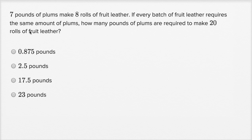So, let's just set up a ratio. We need seven pounds of plums for every eight rolls of fruit leather. Now, we need to think about how many pounds of plums we're going to need to make 20 rolls of fruit leather.